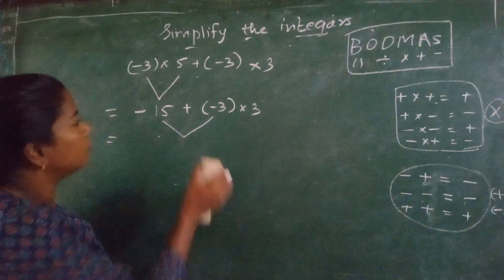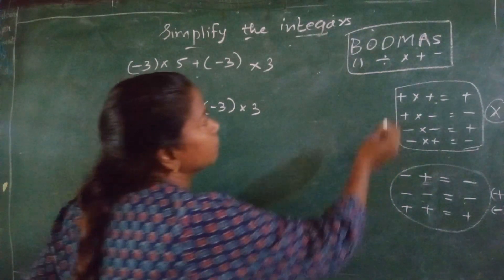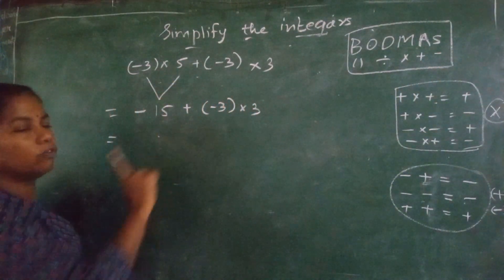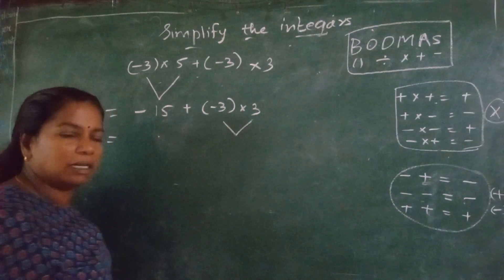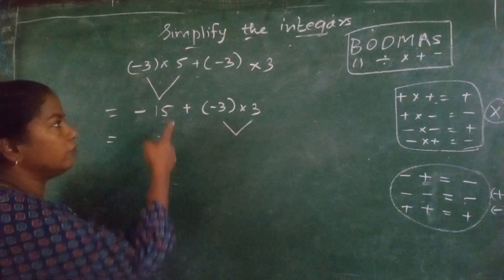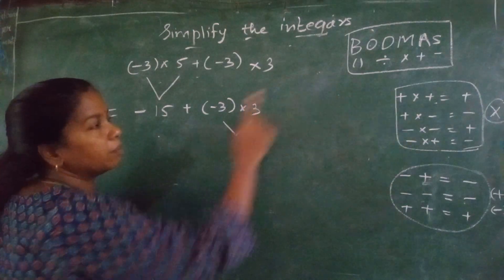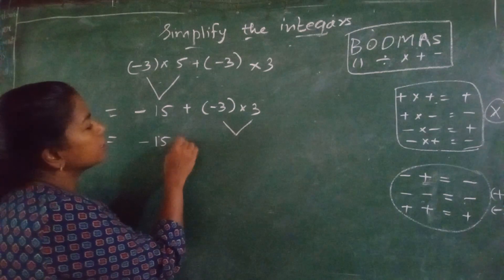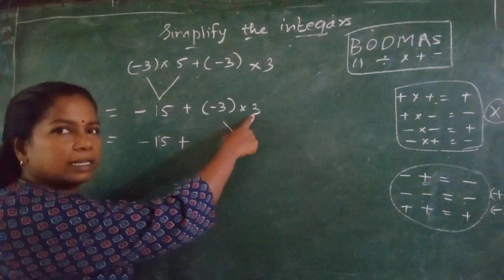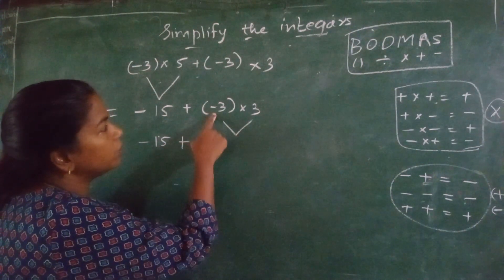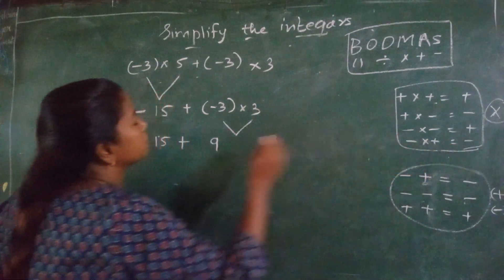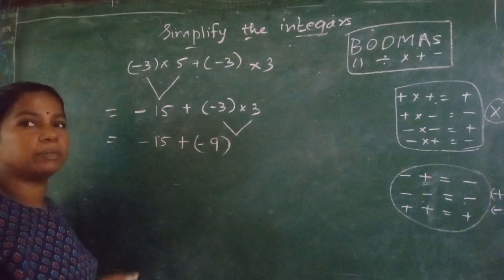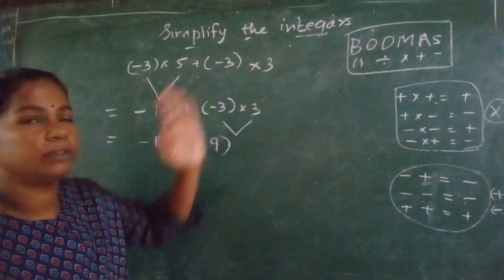Now, what the BODMAS rule says? First, you have to do division, multiplication. Then, go to addition. You cannot go for plus now. You will go for multiplication. Got it? Even if plus comes first, then also, you have to go and apply this BODMAS rule. Minus 15, you copy it as it is. Plus, 3 threes are 9. And which sign you will put? Minus into plus, minus. Got it? So, remember the sign. Remember the order of solving it.